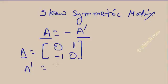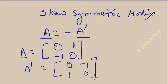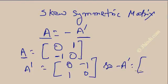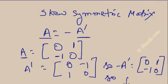So what is A dash? A dash is obtained by making the first row the first column: [0,1], and the second row the second column: [-1,0]. Now minus A dash means multiply each element by minus 1, giving [0,1; -1,0], which equals A. So A equals minus A dash for a skew-symmetric matrix.